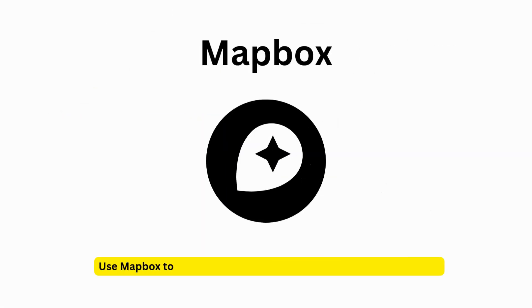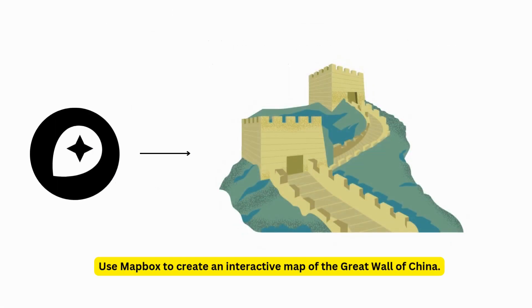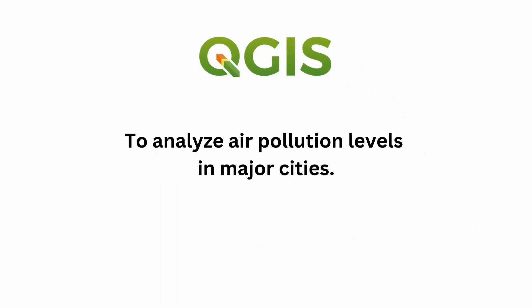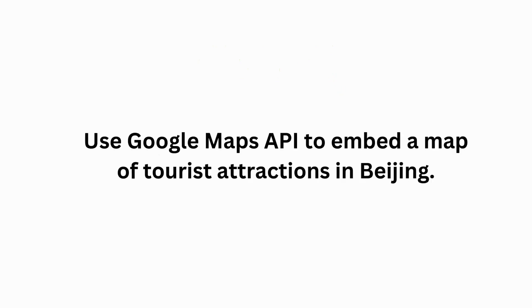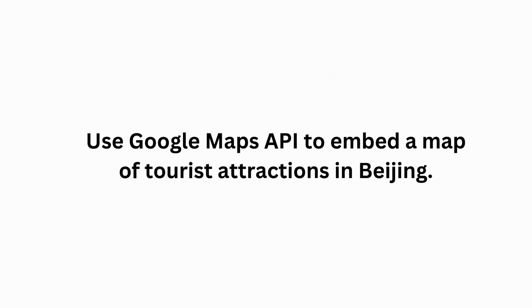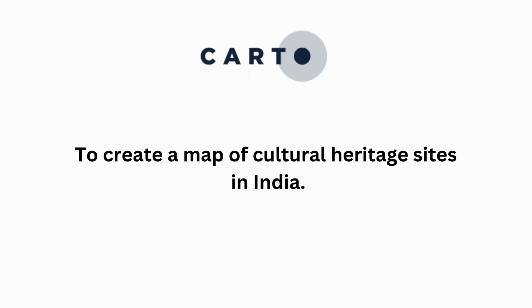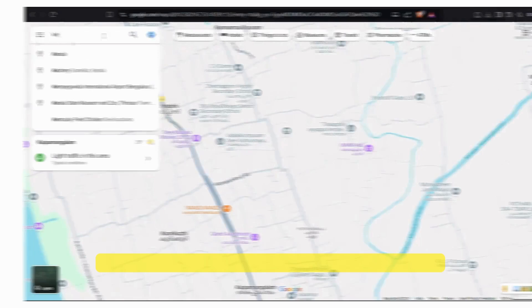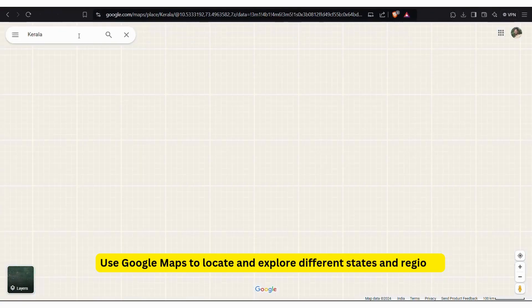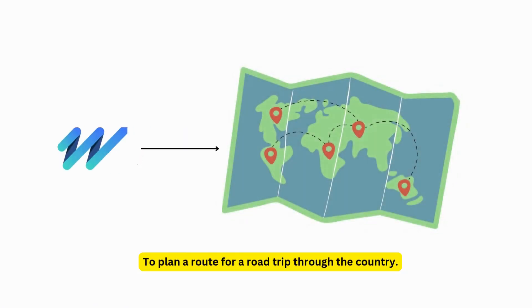For China, use Mapbox to create an interactive map of the Great Wall of China. Use QGIS to analyze air pollution levels in major cities. Use Google Maps API to embed a map of tourist attractions in Beijing. For India, use Carto to create a map of cultural heritage sites. Use Google Maps to locate and explore different states and regions. Use HERE WeGo to plan a route for a road trip through the country.